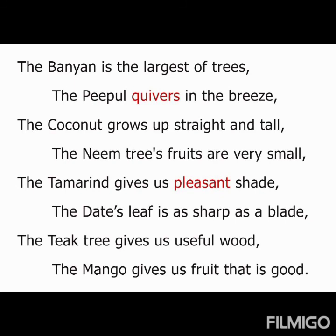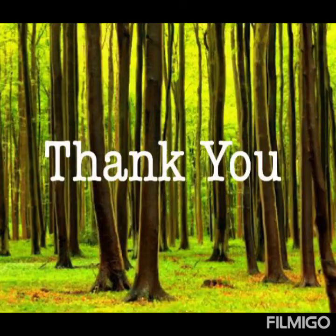Children, this poem is a memory poem — you can learn it by heart very easily. See the rhyming words: trees and breeze, tall and small, shade and blade, wood and good. Okay children, I hope you all understand this poem. Memorize it. Thank you, children.